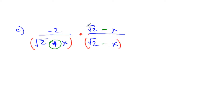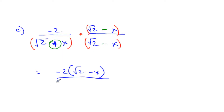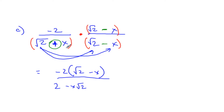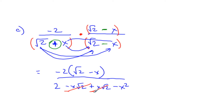So doing that, I can say the top is negative 2 times root 2 minus x. And on the bottom I have to FOIL it. Root 2 times root 2 is the square root of 4, which is 2. Root 2 times negative x is negative x root 2. Positive x times root 2 is positive x root 2. And x times negative x is negative x squared. It looks like I have square roots on the bottom, but if I look carefully, there's a negative and a positive — so they subtract away. The bottom tidies up to 2 minus x squared. No square roots down here.